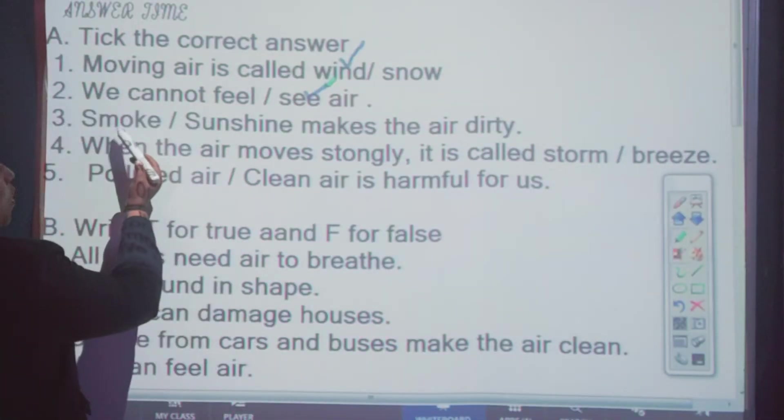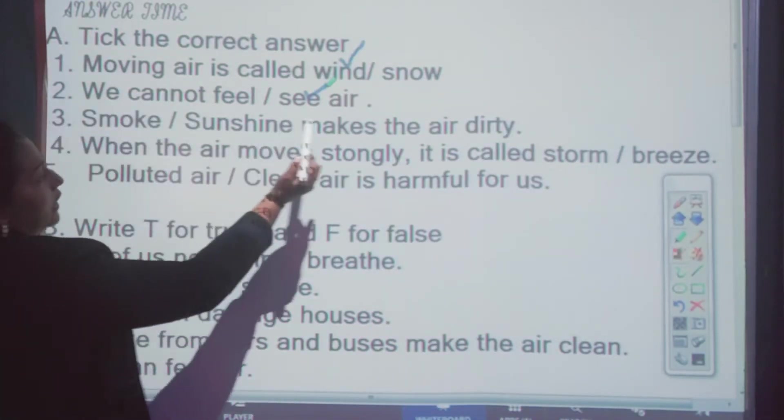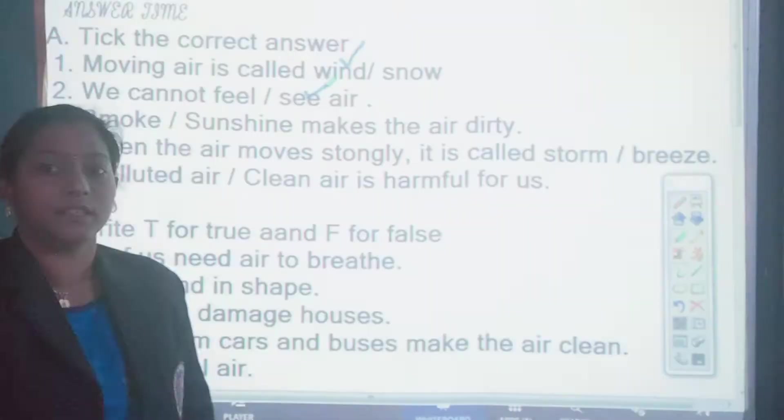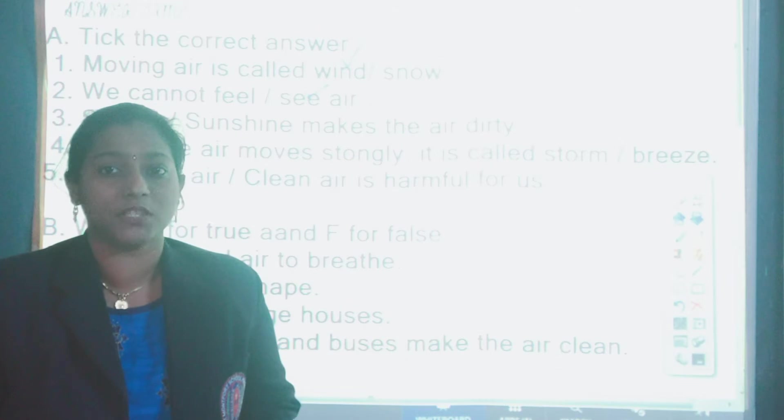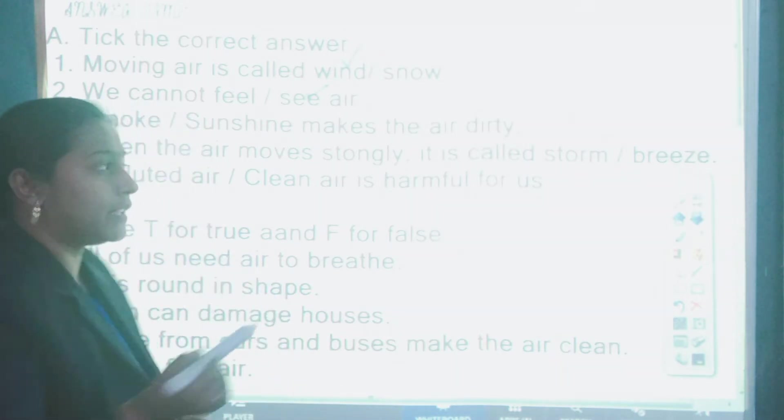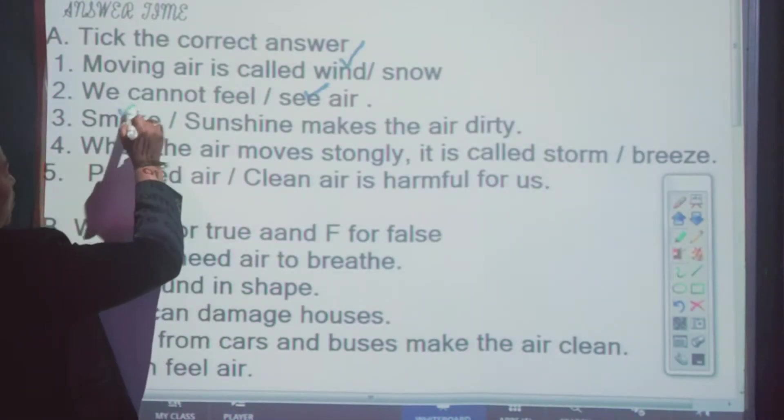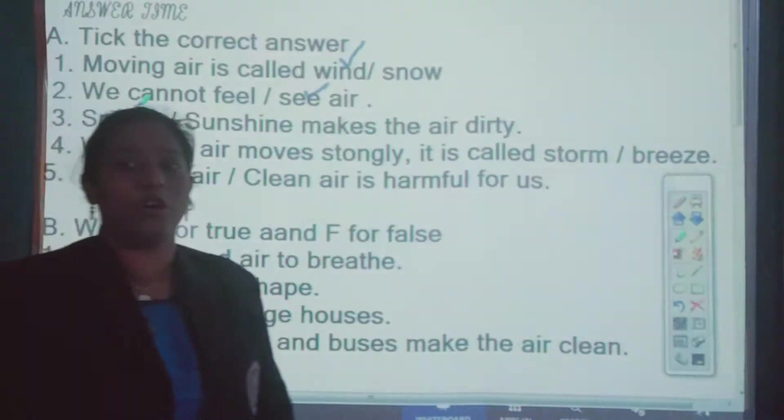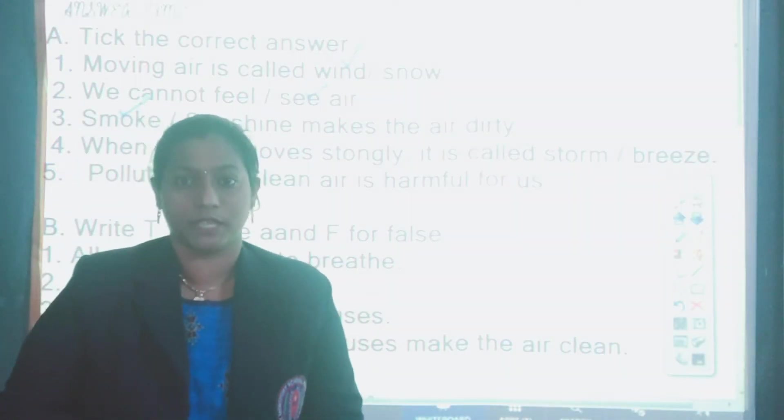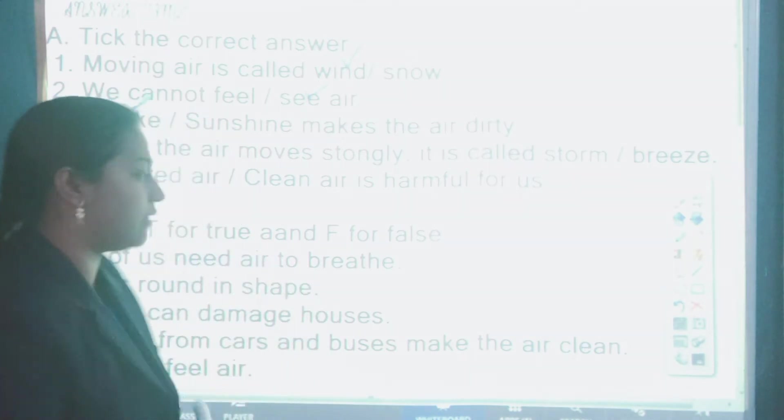Next, smoke or sunshine makes the air dirty. What makes the air dirty? Smoke. Smoke means dhua. Dhua air ko dirty karta. Sunshine is just light from sun, so it will not make the air dirty. The answer to this is smoke. Dhua jo factory se or buses, vehicles se jo nikalta, woh air ko dirty karte, polluted karte. Right? We have studied this.